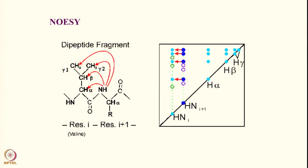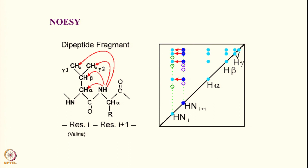Let me give an example of a small dipeptide segment. Consider a peptide with NH, C-alpha, CO as residue I — which is valine, having C-alpha H, C-beta H, and two gamma methyls — followed by residue I+1 with its NH, C-alpha, and CO. The NOE is proportional to 1/R_ij^6, where R_ij is the distance between two protons. Wherever the distance is small, you expect to see a cross peak.